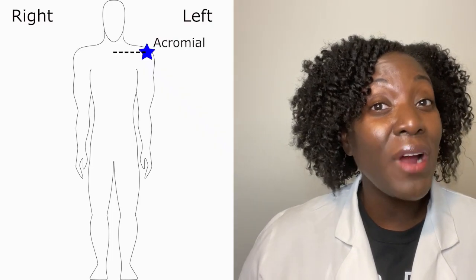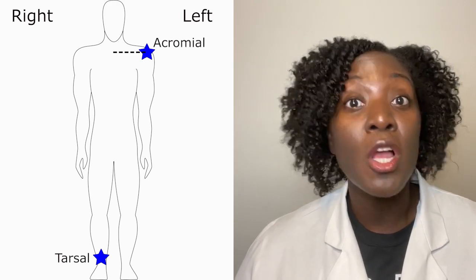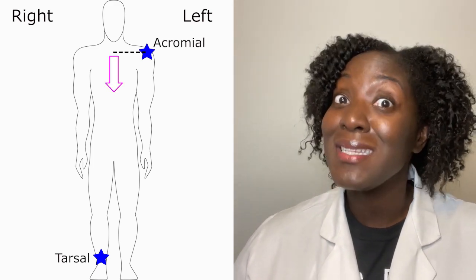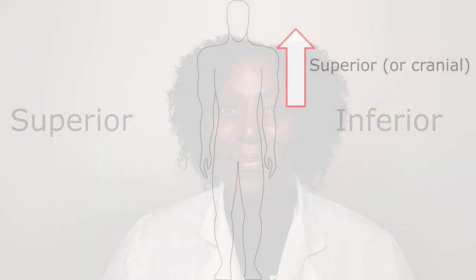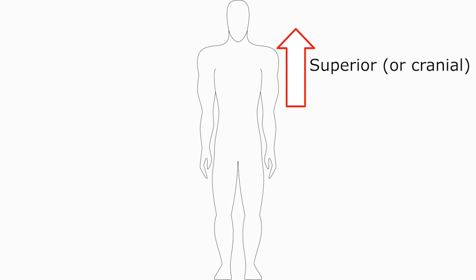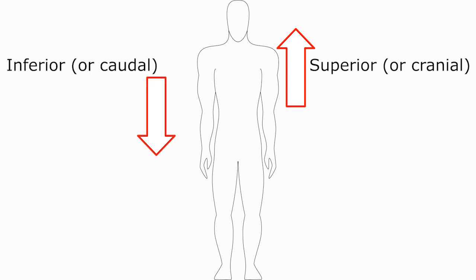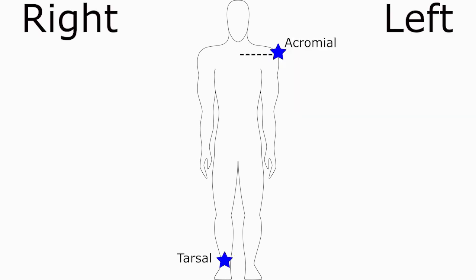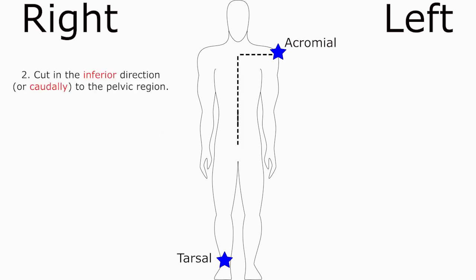All right, let's get back to the patient. We are trying to reach the right tarsal, which is the ankle, so we need to move our incision south. That brings us to our next two terms: superior and inferior. Superior or cranial means towards the head, and inferior or caudal means away from the head. Since I'm making an incision toward the ankle and away from the head, I will cut in the inferior direction or caudally until I reach the pelvic region.